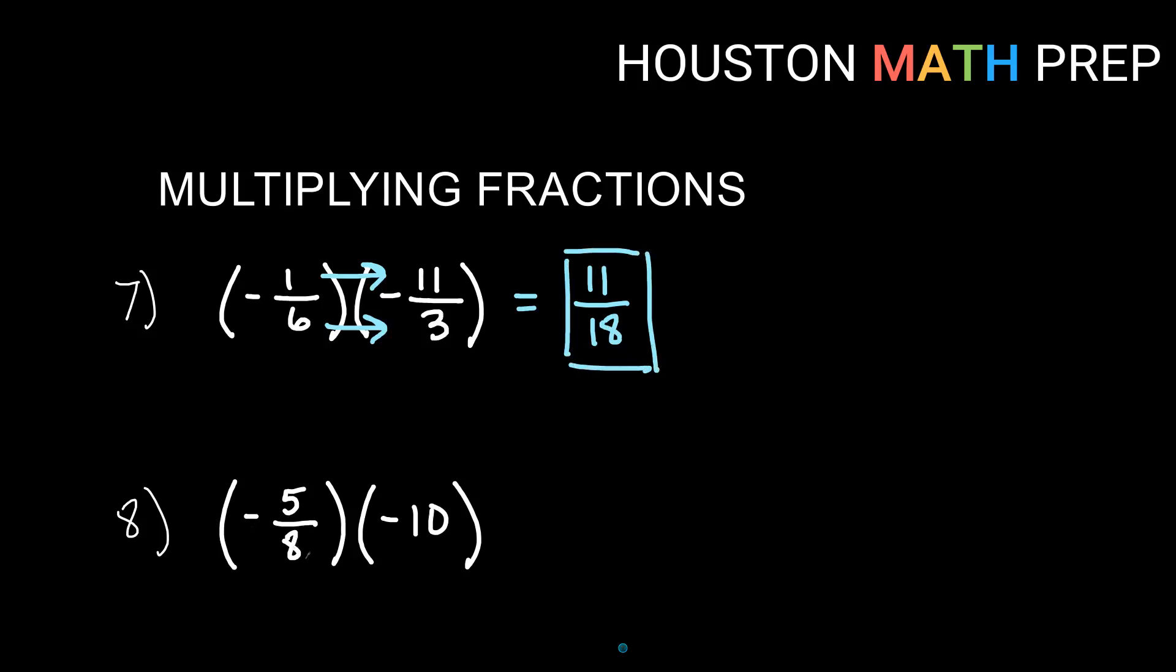Last one here, negative 5 over 8 times negative 10. Before you get into the numbers, you might want to make a note in your head that negative times negative is going to be positive. If it helps you to rewrite that negative 10 as negative 10 over 1, I might recommend that. So negative 10 over 1. And then go from here, right? So negative times negative is positive. You could reduce here or not. Let me do this one. Maybe I don't see that 10 and 8 have a common factor, right? So let's just say I go straight across. So 5 times 10 will be 50 on the top. 8 times 1 is going to be 8 on the bottom.